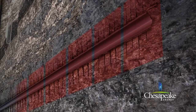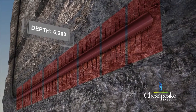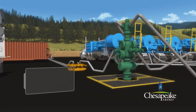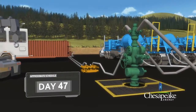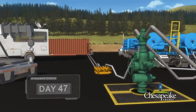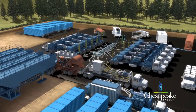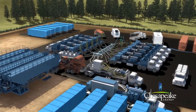At the conclusion of the fracturing operations, the isolation plugs are removed from the well and production can start. The produced fluids are diverted through a flow-back manifold into storage tanks. The fluids are then recycled or disposed of according to state and federal regulations.